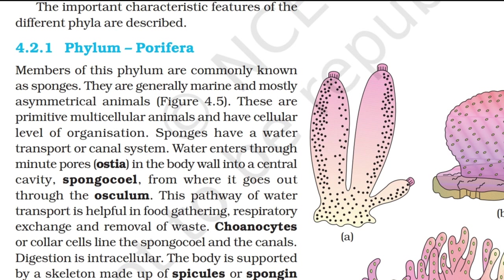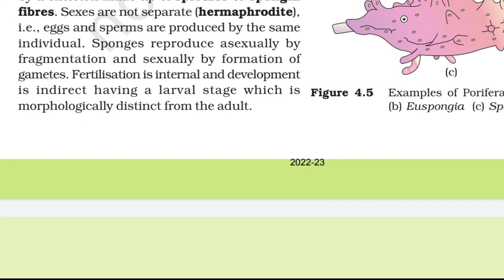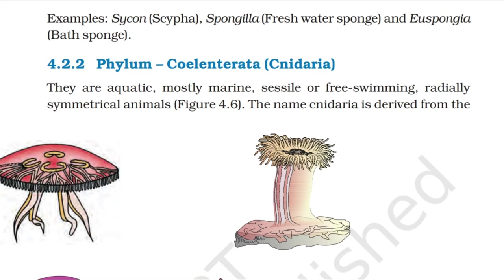The body is supported by a skeleton made up of spicules or spongin fibers. Sexes are not separate, i.e., hermaphrodite — eggs and sperms are produced by the same individual. Sponges reproduce asexually by fragmentation and sexually by formation of gametes. Fertilization is internal and development is indirect, having a larval stage which is morphologically distinct from the adult. Examples: Sycon, Spongilla (freshwater sponge) and Euspongia.